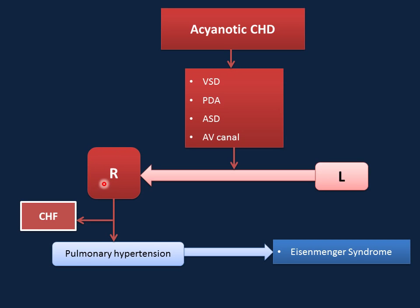As the left-to-right shunt increases, if the ratio is more than 2 to 1, this can present with congestive heart failure. The timing of presentation is usually between 4 to 6 weeks of age. If left untreated, this can cause pulmonary hypertension and irreversible increased pulmonary vascular resistance, which is well known as Eisenmenger syndrome.